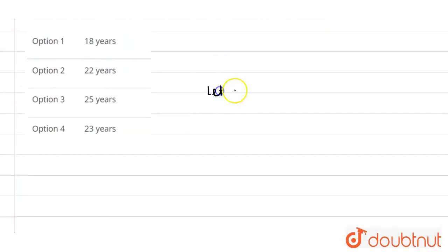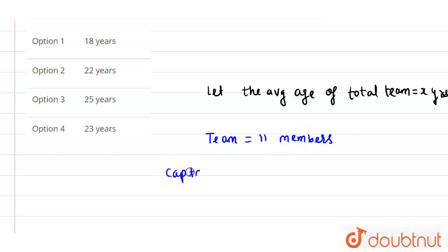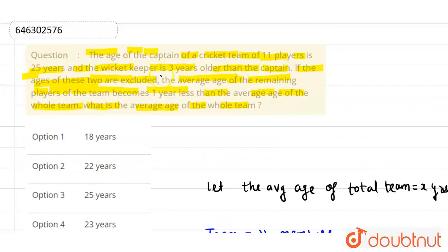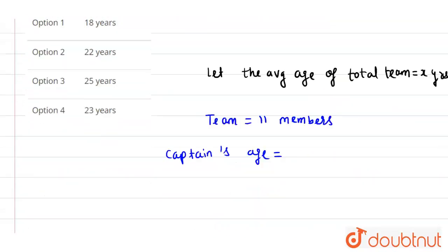Let the average age of total team be x. The captain's age is 25 years.